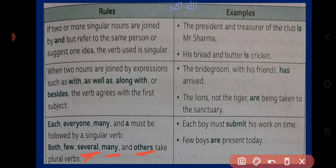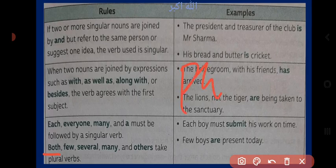Rule: both, few, several, many, and other take a plural verb۔ جیسے pronouns میں پڑھا تھا کہ both کے ساتھ ہمیشہ plural pronoun آتا ہے، اسی طرح verb میں بھی ان کے ساتھ ہمیشہ plural verb آتی ہے۔ مثال: 'Few boys are present today۔'